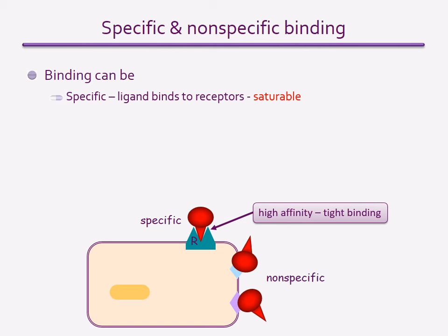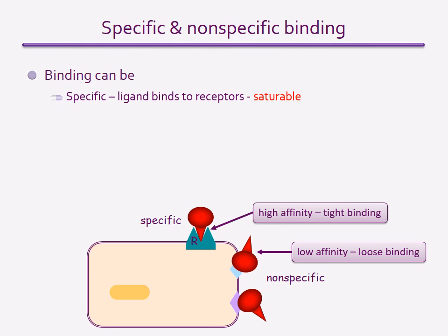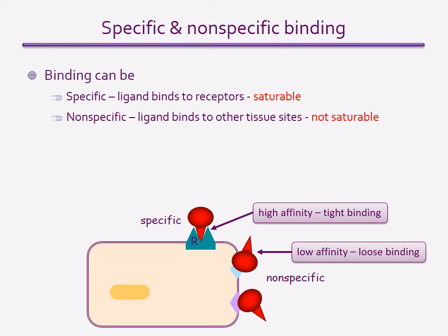But ligands can also bind to other components of tissues that are not involved with receptor activity. These interactions are non-specific and occur with a very much lower affinity. As the binding to these sites is not specific, there is an endless number of sites in the tissue to which the ligand can loosely bind. So as the concentration of the ligand is increased, the number of non-specific sites that become bound keeps increasing — therefore, non-specific binding is not saturable.